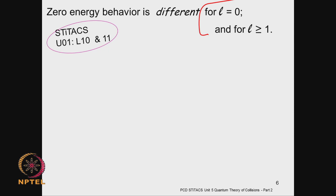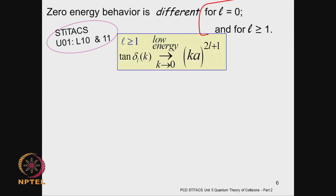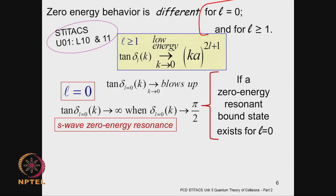Referring to lectures 10 and 11 of Unit 1, we have seen that the tangent of the phase shift has for its low energy limit a (2L+1) power dependence on k. As k tends to 0, this is like a threshold effect. These results are very general and powerful and go into the framework of what are commonly known as threshold laws — Wigner made significant contributions to this area. For L = 0 the tangent blows up when you have a zero-energy resonance, when there is a bound state exactly at that limit.